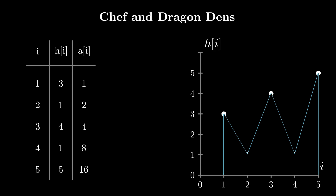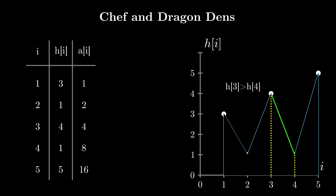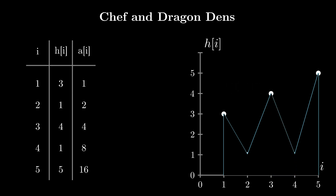Now let's define something called a move. We can move from point i to point j if h[i] is greater than h[j]. So if i=3 and j=4, we can move from 3 to 4 as h[3] > h[4]. However, we cannot move from 4 to 3 as h[4] < h[3]. A move is also invalid if the line segment joining the two points passes through the solid portion of our graph. For example, if i=5 and j=2, the line joining them passes through the solid portion, hence the move is invalid.